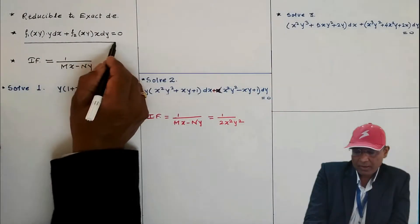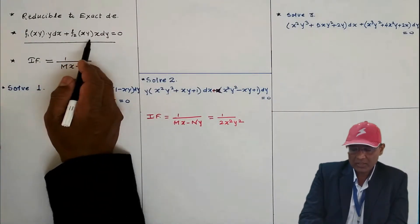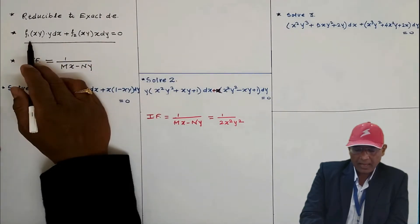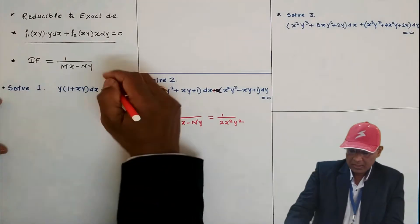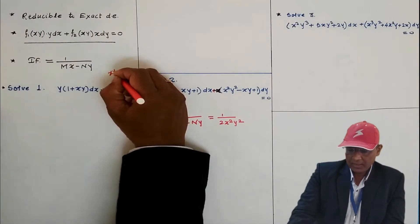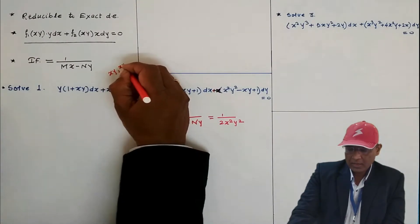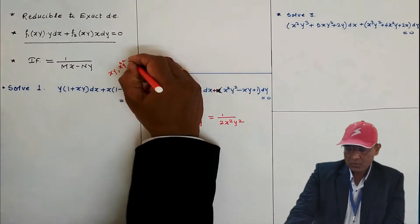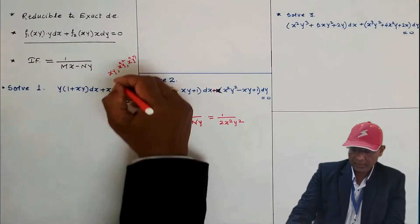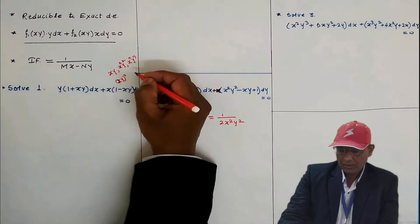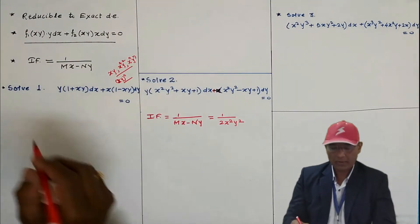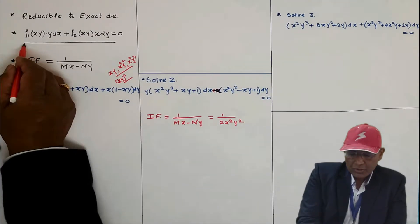The non-exact differential equation we are considering is of the type f1(xy)·y·dx + f2(xy)·x·dy = 0. Here f1(xy) and f2(xy) are functions of x times y. For example, xy, (xy)², or x^n·y^n are all functions of xy. Note that 1 can be written as (xy)^0, so it also qualifies as a function of xy.